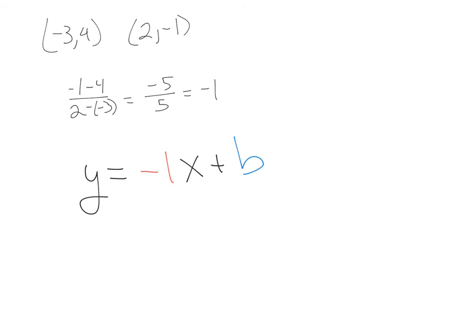The way that I find the b is I take one of my two points, either one of these two points, and I plug them into the equation so far to figure out what my b is going to be. So what that looks like is instead of y, I write, say, 4, plugging this point in, equals negative 1. Instead of x, I put negative 3, and then plus b. And then I solve for b.